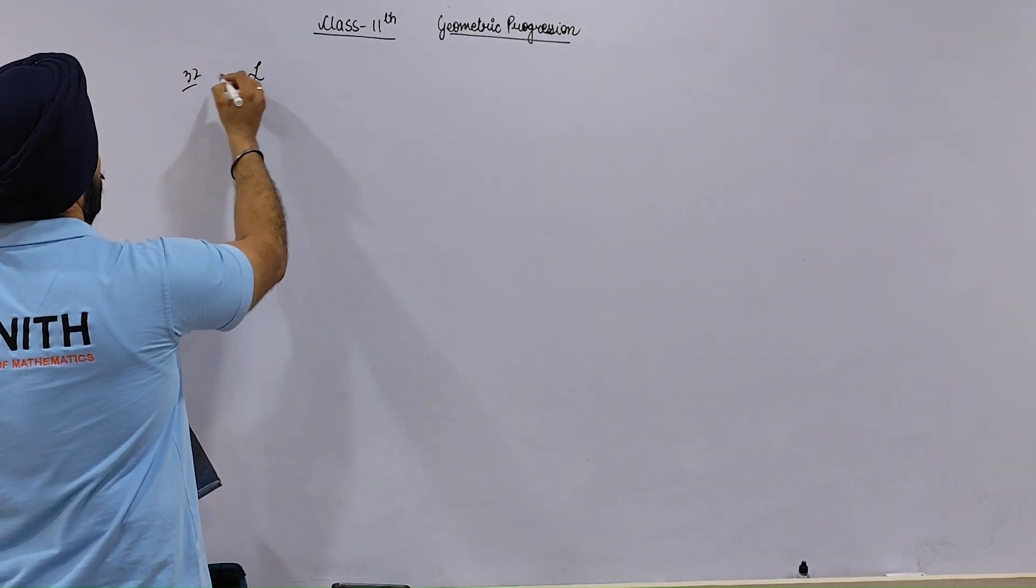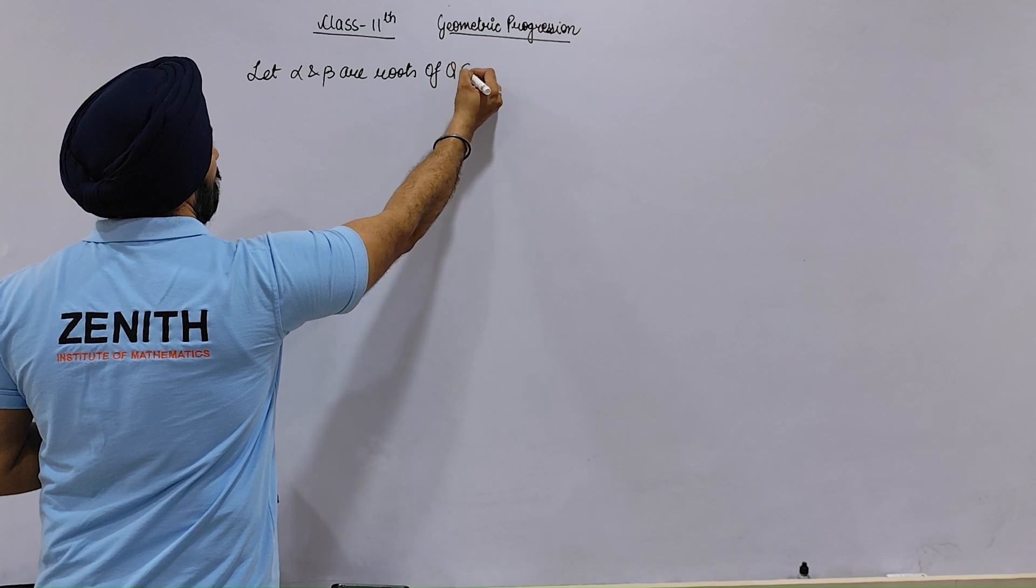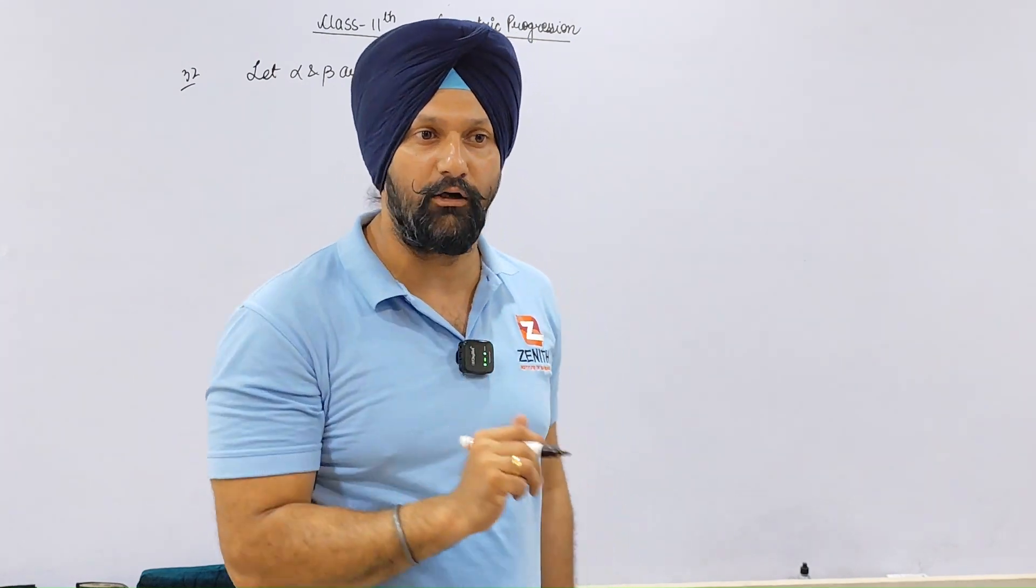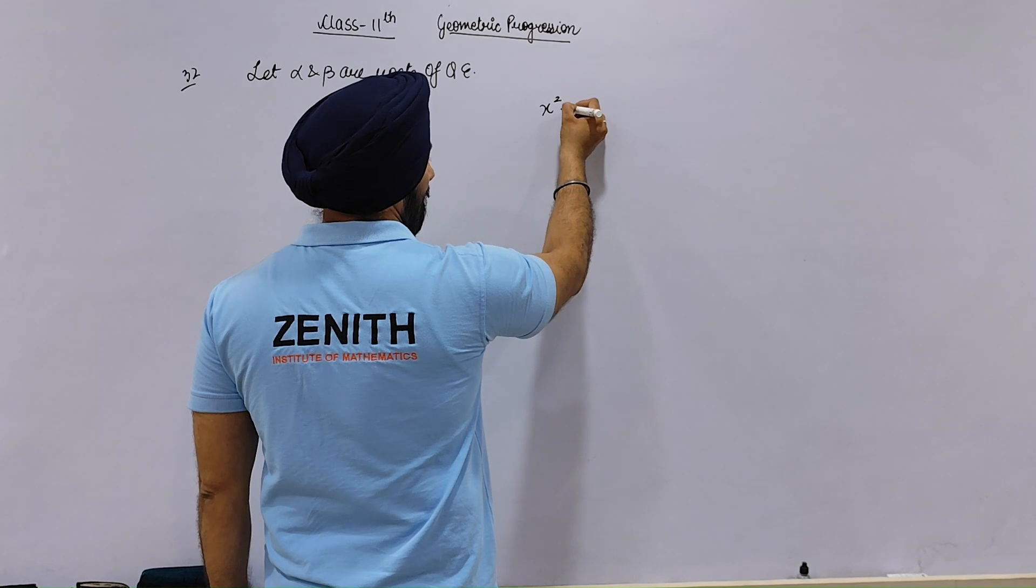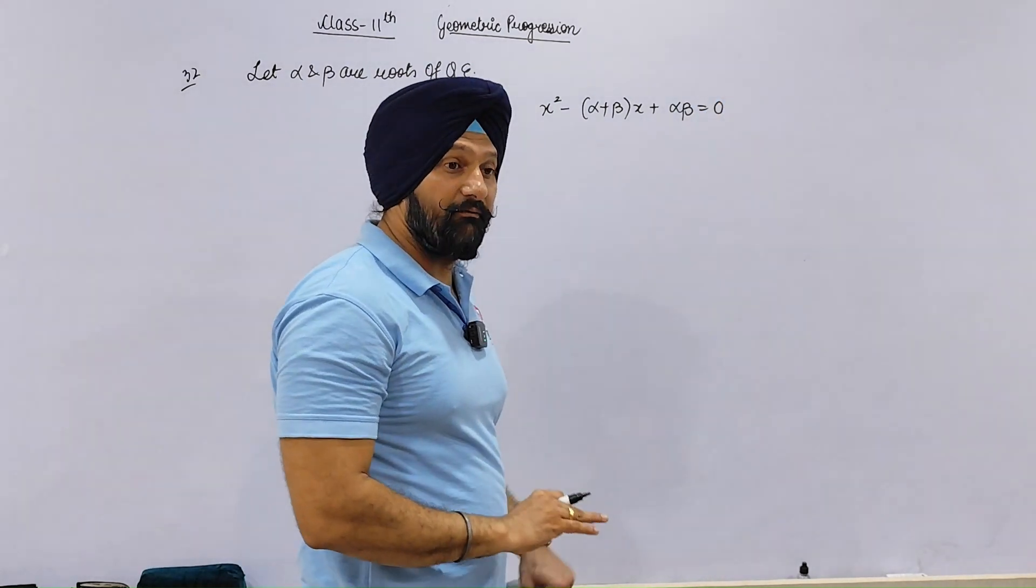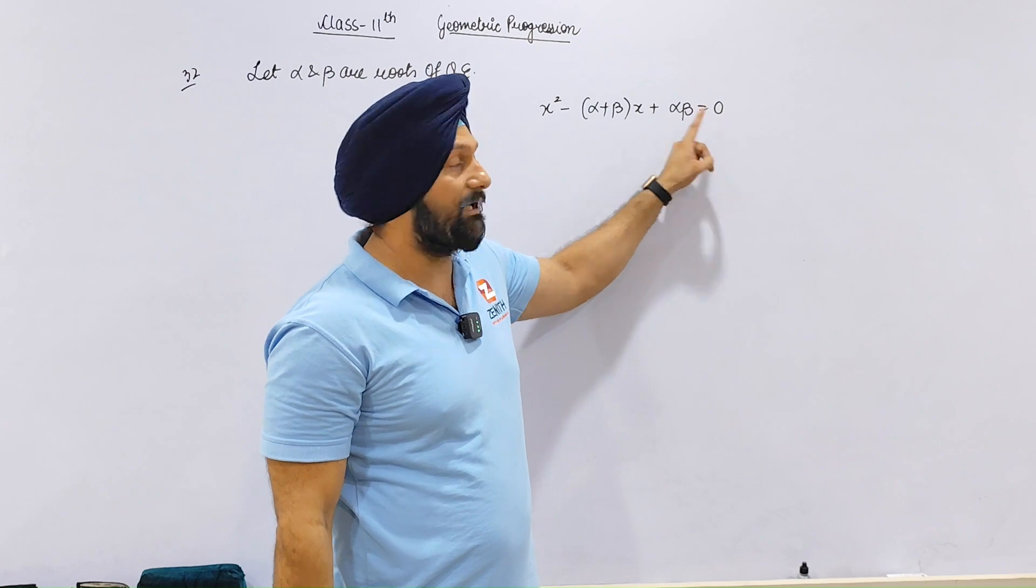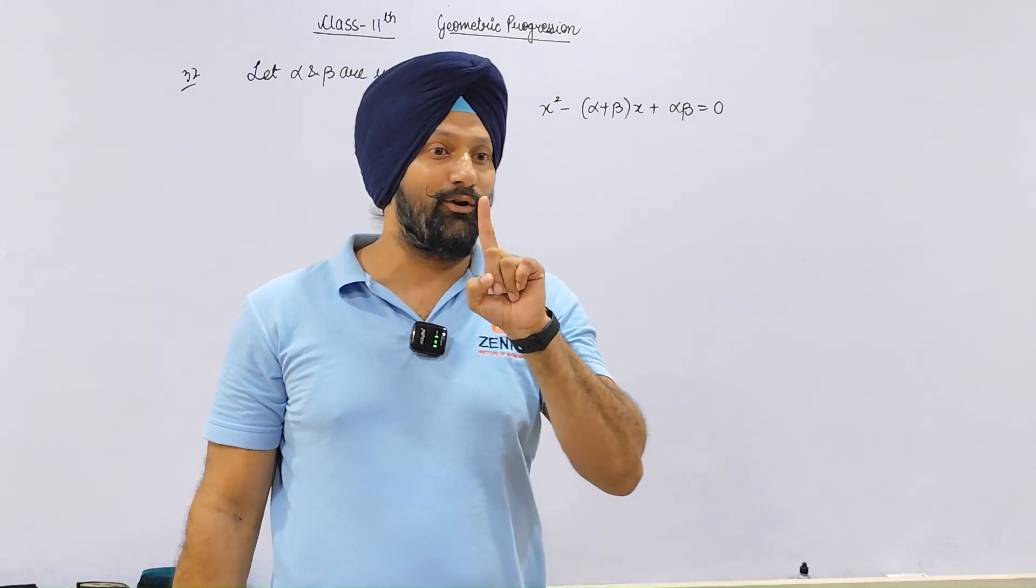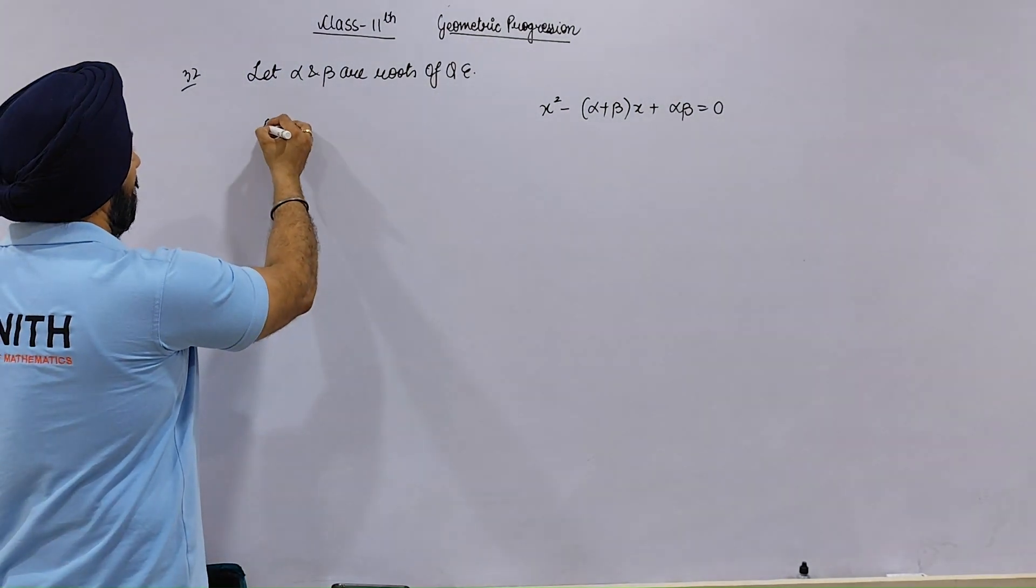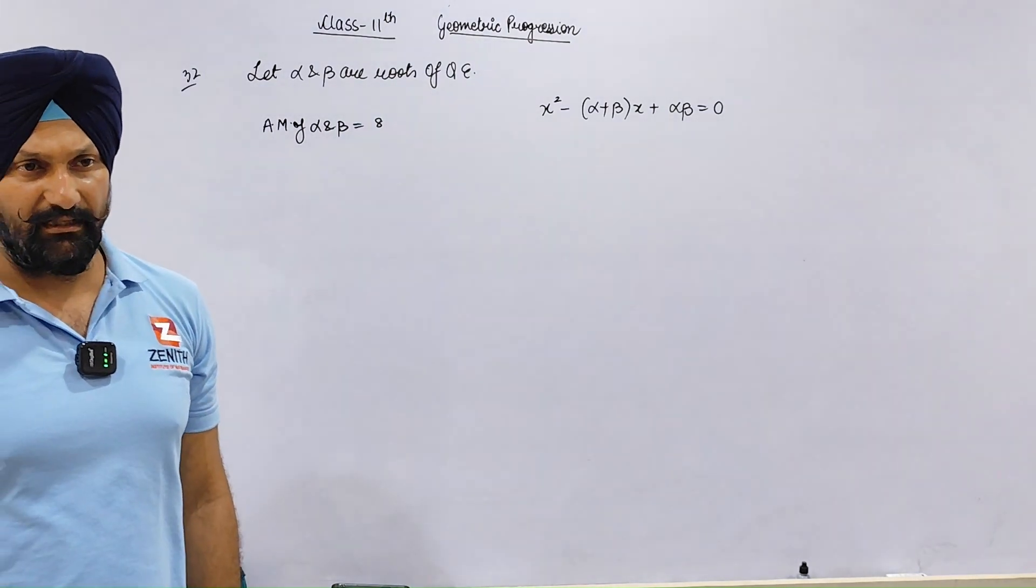Alpha and beta are roots of a quadratic equation. I hope you remember the concepts. The arithmetic mean of alpha and beta is 8. Is the mean of alpha and beta 8?